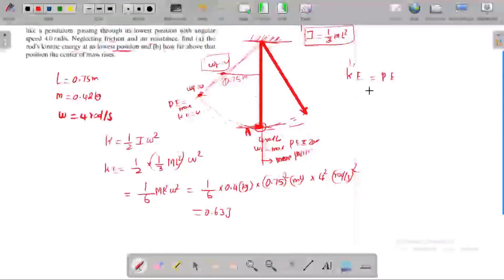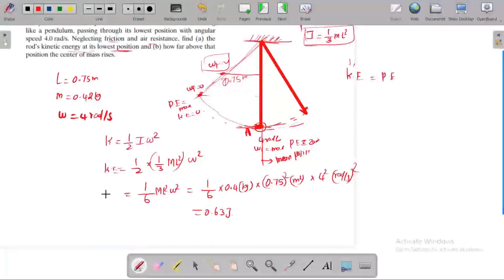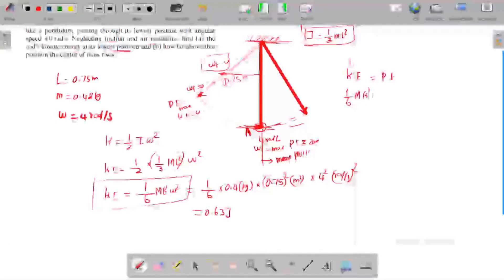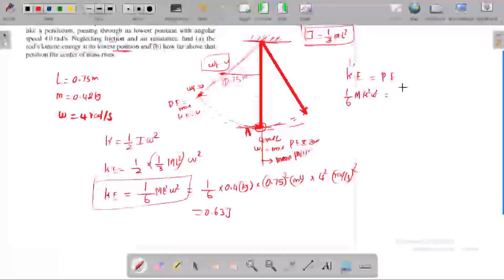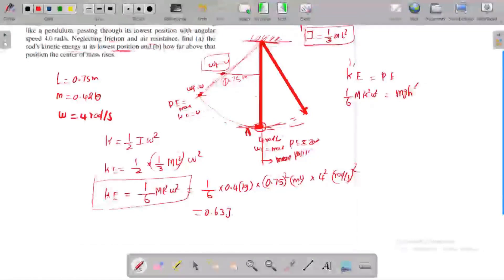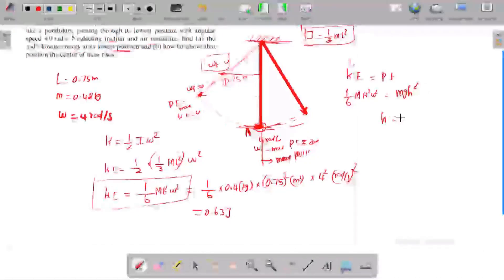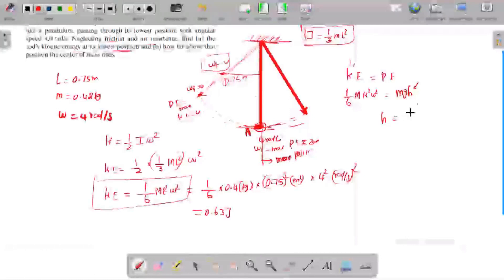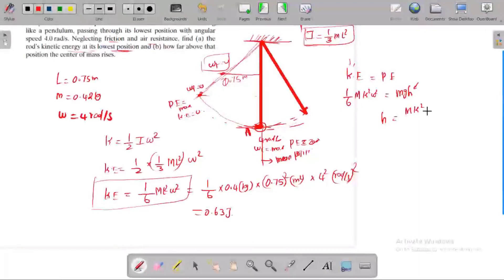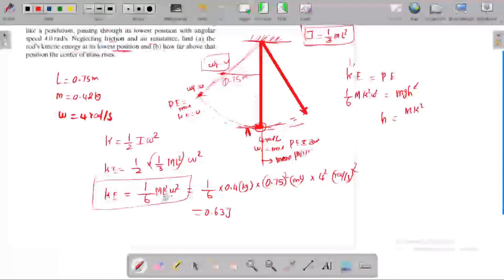What is the formula for kinetic energy? We derived the formula for this rod: one by six m L squared omega squared. Potential energy is mgh. We need to find the h value. So h is equal to kinetic energy divided by mg.